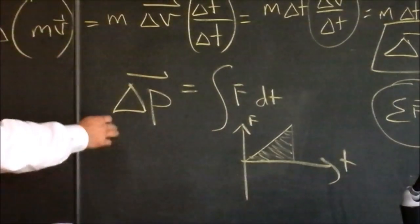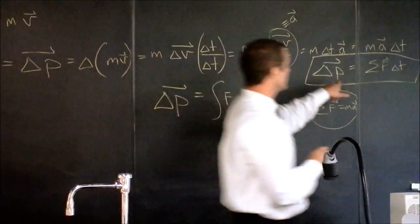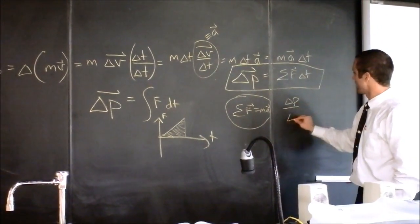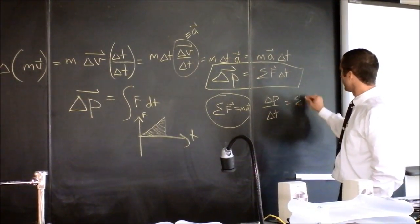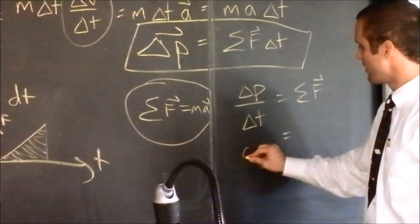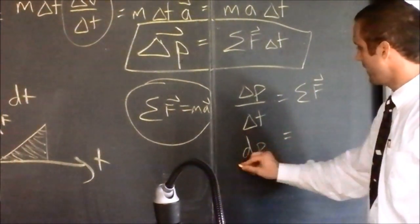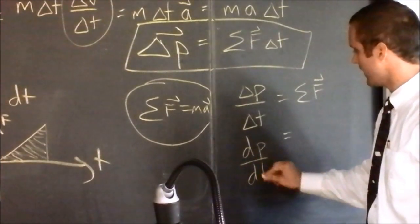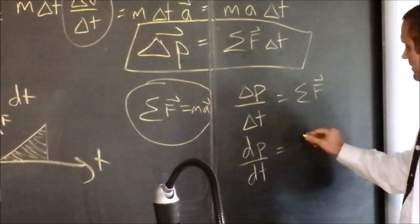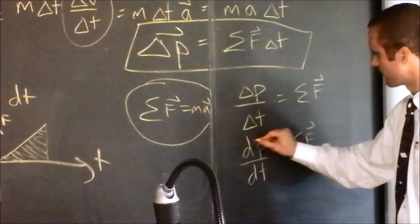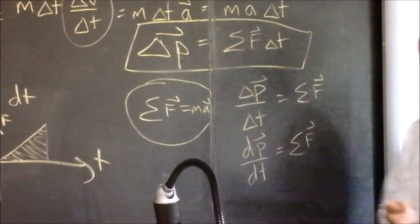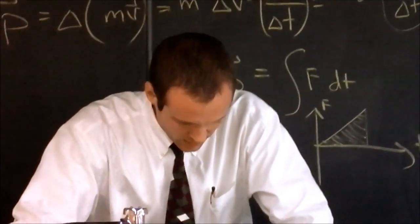Another cool thing we can do — I still don't like this delta. We can take this equation and write it like this: delta p over delta t is equal to net force. Another way I can write net force is as the derivative of momentum as time goes on. This is the derivative — it's not deltas anymore. It's the derivative of momentum as time goes on, and that's what net force is. Of course momentum is a vector also — I'm being sloppy with my vector hats.